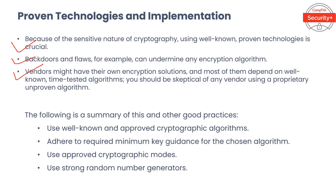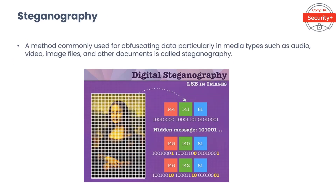Because of the sensitive nature of cryptography, using well-known, proven technologies is crucial. Factors and flaws can undermine any encryption algorithm. Vendors might have their own encryption solutions and most depend on well-known, time-tested algorithms. You should be skeptical of any vendor using a proprietary and unproven algorithm. Good practices include: use well-known and approved cryptographic algorithms, adhere to required minimum key guidance for the chosen algorithm, choose approved cryptographic modes, and use strong random number generators.